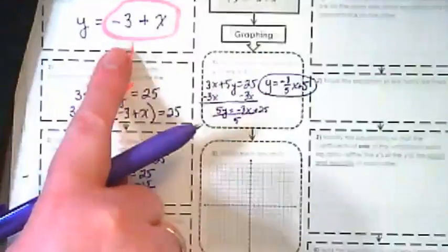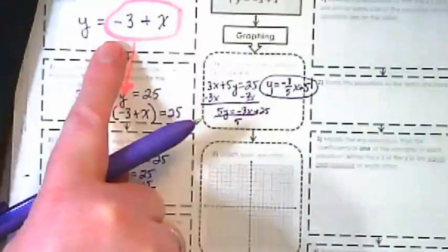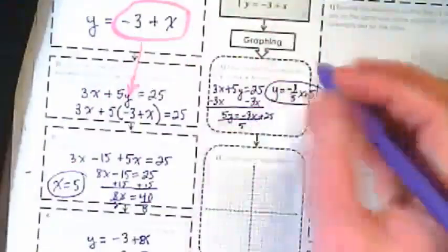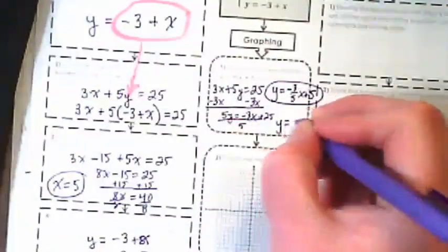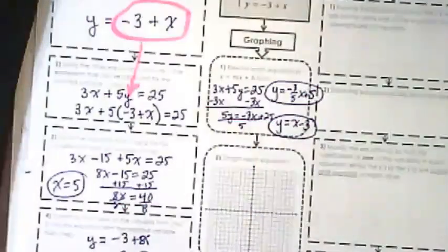The second equation is almost in mx plus b form, isn't it? The y is correct. The y is already by itself. We just need to reverse this order. And those are our two equations.